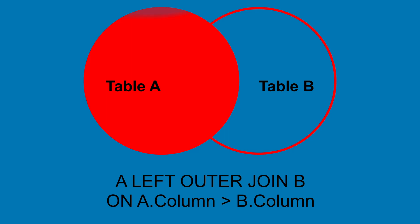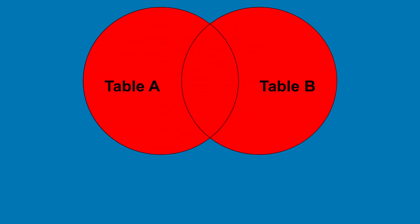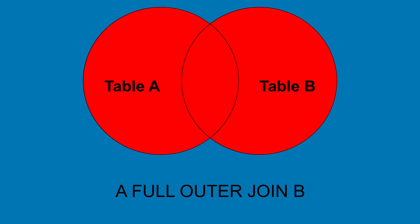And it gets even better. This Venn diagram is somehow supposed to represent a full outer join. In fact, it represents a union of sets A and B. And a full outer join — or symmetrical outer join as Codd referred to it — suffers from the exact same issues we saw with the previous types. So there's really no need to elaborate. I think you get the point by now.